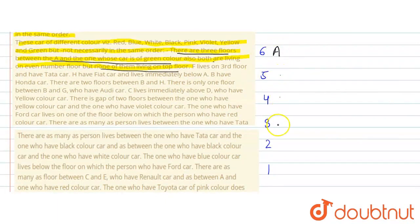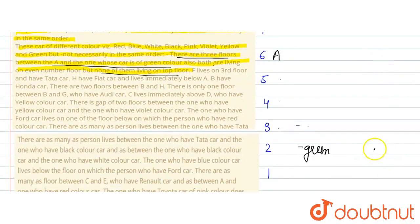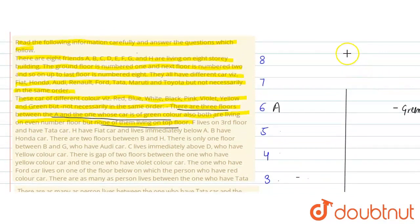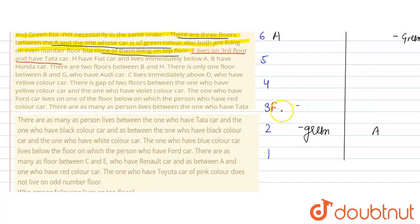So we have two possible diagrams here. After eliminating, we apply the next condition: F lives on the third floor and has a Tata car. So F is placed on the third floor with the Tata car.